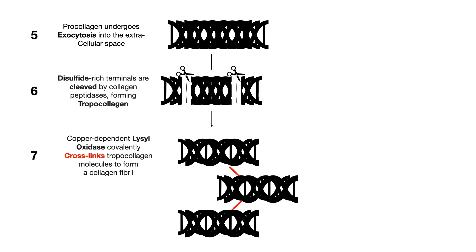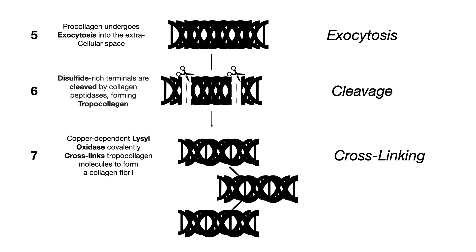To summarize steps five through seven: in step five, we have exocytosis of procollagen. In step six, we have cleavage of disulfide-rich terminals, which forms tropocollagen. And in step seven, we have covalent crosslinking of tropocollagen into collagen fibrils.